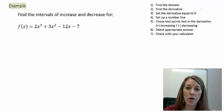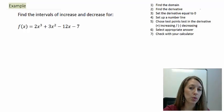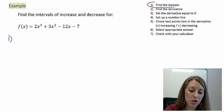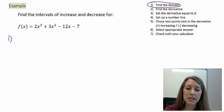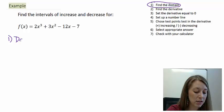I have my steps listed on the right in case we want to reference them, and the function on the left. Find the intervals of increasing and decreasing for f of x equals 2x cubed plus 3x squared minus 12x minus 7. The very first step is to find the domain. In this function, I don't have any denominators and I don't have any square roots. Therefore, my domain is going to be all real numbers, so I don't have anything excluded from this graph.